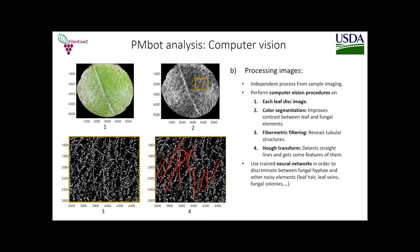For the computer vision step, processing involves four stages: color segmentation to improve contrast between the leaf and fungal hyphae; fibrometric filtering, since hyphae are tubular structures; Hough transformation to detect straight lines; and then bringing this information into neural networks to discriminate between powdery mildew hyphae and other elements on the leaf disk — such as leaf veins, which are also tubular. The system needs to understand the differences between what powdery mildew hyphae look like versus other tube-like elements.